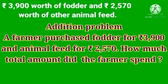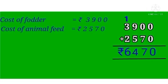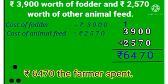The farmer bought fodder and animal feed, so how much total amount did he spend? Cost of fodder is Rs. 3,900 and cost of animal feed is Rs. 2,570. Adding: 0 plus 0 is 0. 0 plus 7 is 7. 9 plus 5 is 14, write 4 carry 1. 3 plus 1 is 4, 4 plus 2 is 6. Therefore Rs. 6,470 is the total amount the farmer spent.